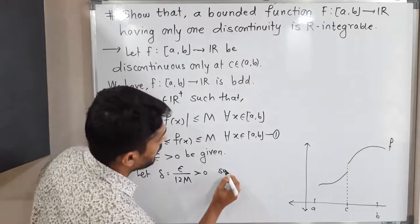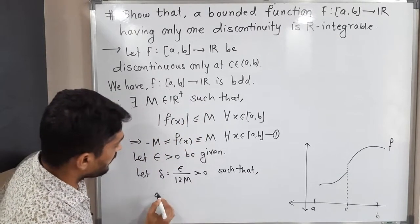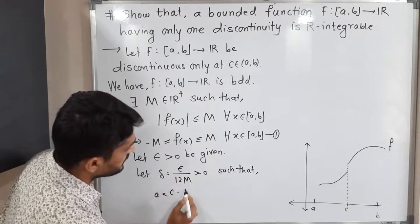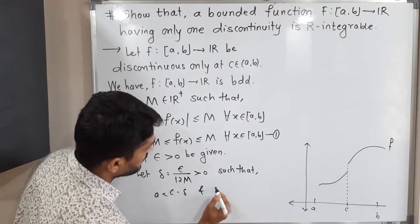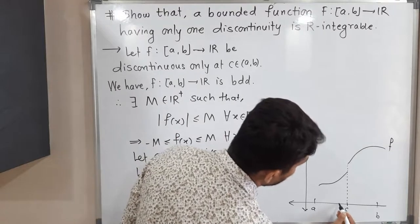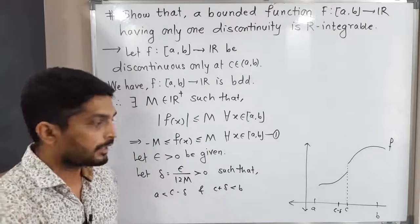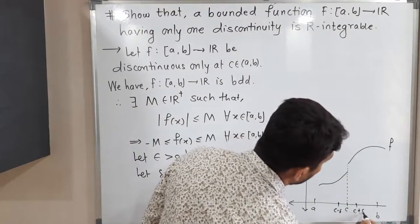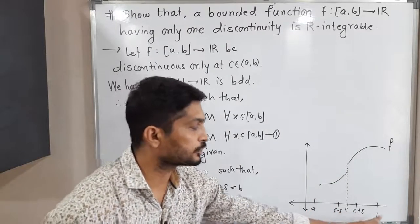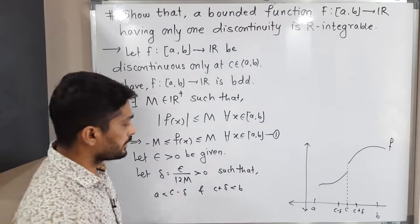We require delta to satisfy two conditions: a < c − delta and b > c + delta. That means c − delta lies strictly between a and c, and c + delta lies strictly between c and b. So c − delta is greater than a and c + delta is less than b.